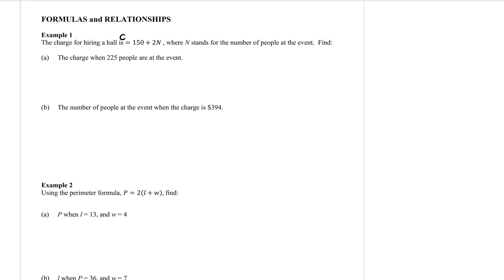So what I have here — this 225 — that is the number of people, that is the n, and I have to substitute that into the equation. So I write the equation down again: c for charge equals 150 plus 2, but instead of writing n, I'm going to replace the n with the 225. Because the 2 is next to the n, it needs to be multiplied. So 2 times 225.